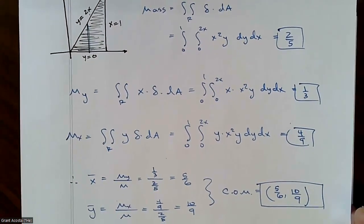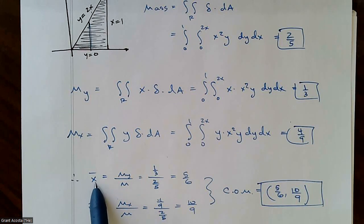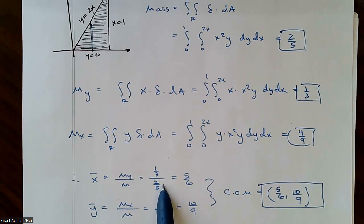So therefore, my x-bar and y-bar. It's always tricky because you think it should be M sub x, but it's actually the moment over the y-axis. A moment about the y-axis over the mass. So one-third divided by two-fifths is five-sixths. Y-bar is M sub x over the mass. I got ten-ninths.